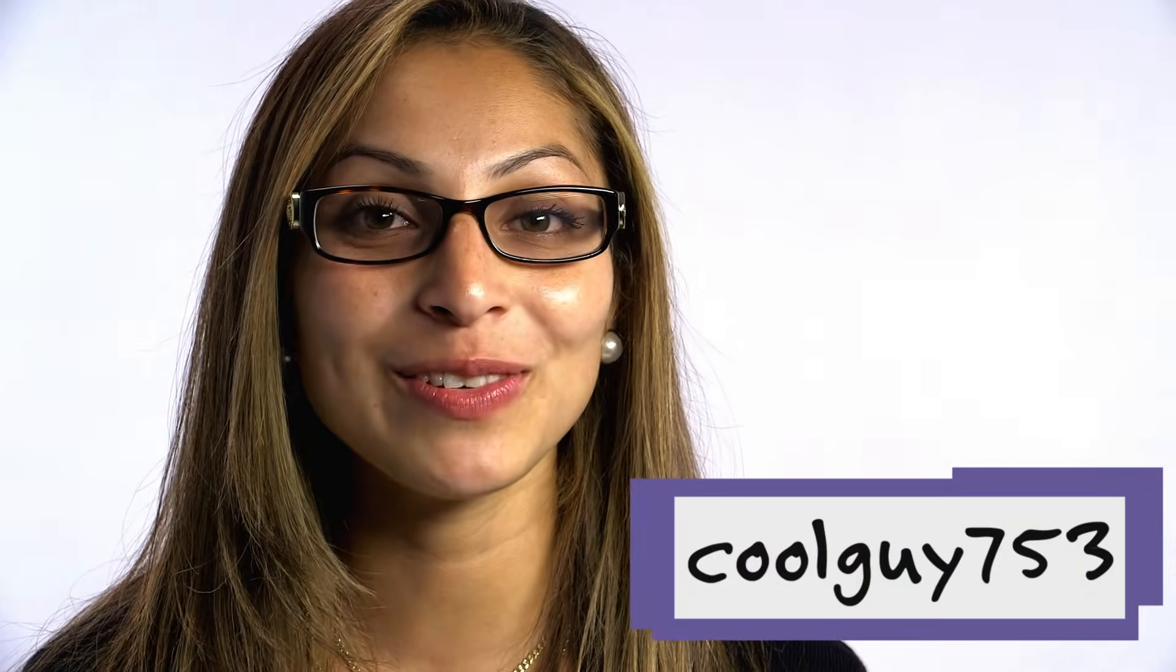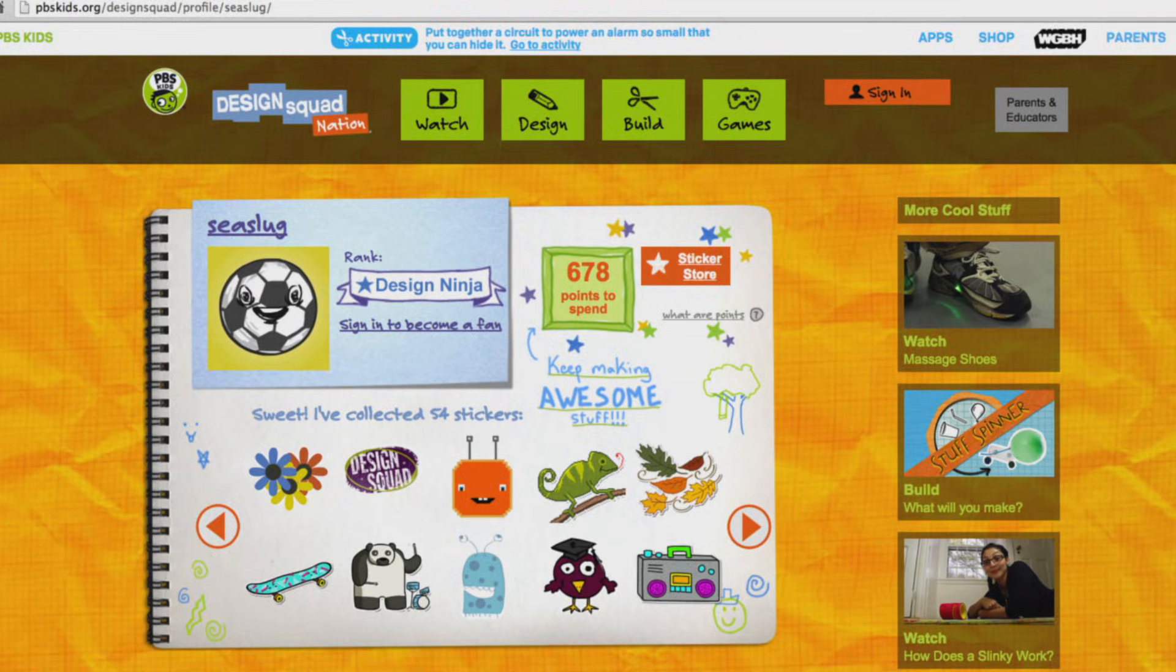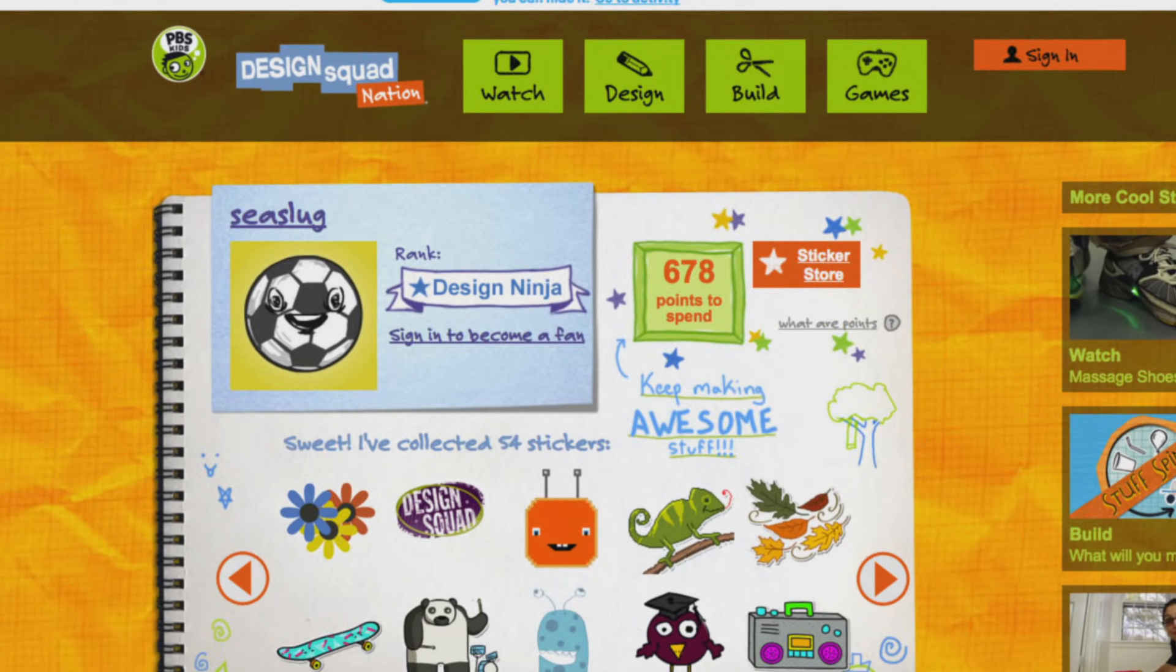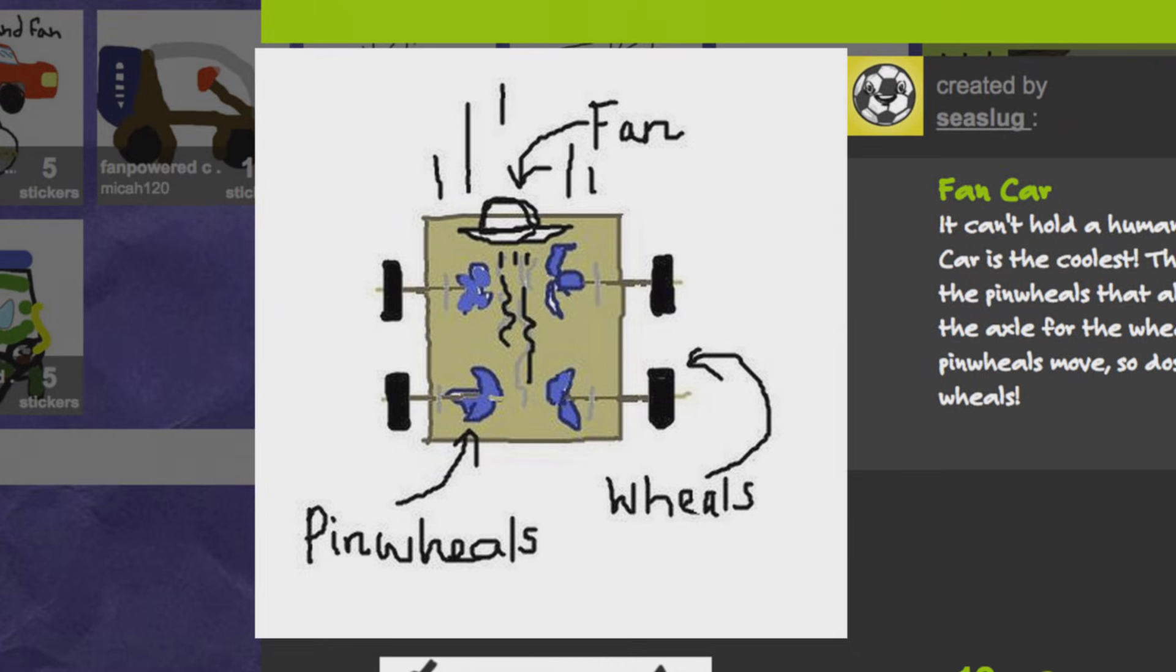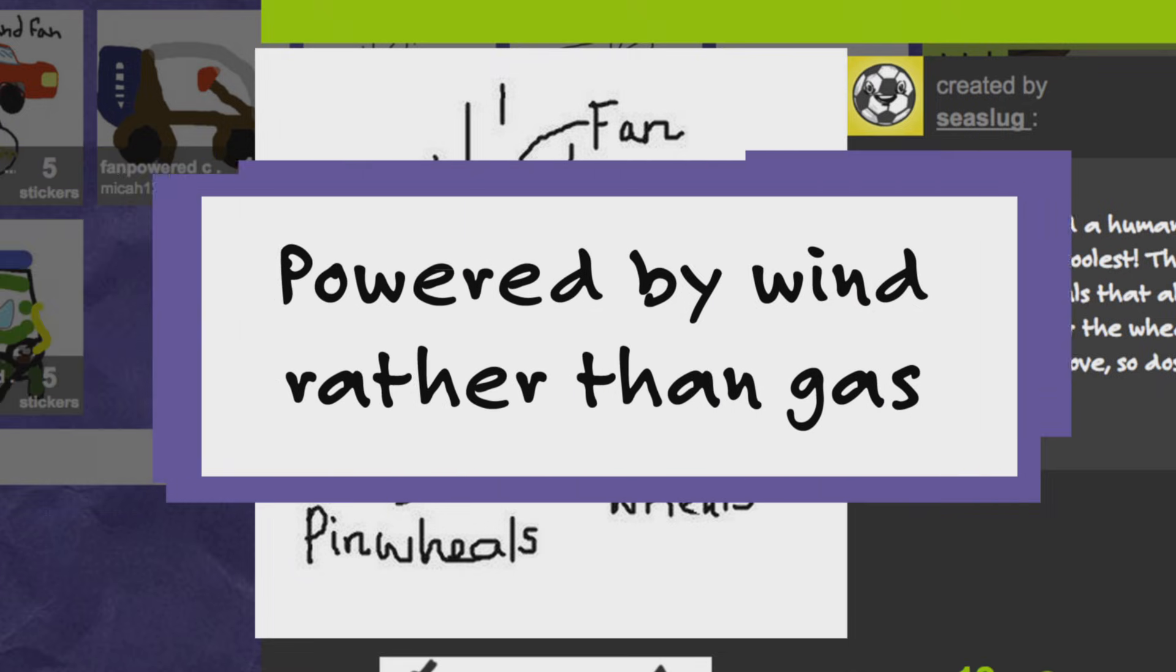We'll draw an isometric sketch of CoolGuy753's fan car. In response to CoolGuy753, C-Slug sent us this nifty sketch of a futuristic car that is good for the environment since it's powered by wind rather than gas.